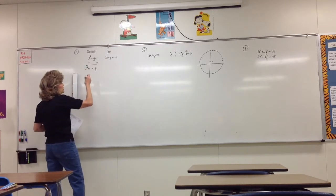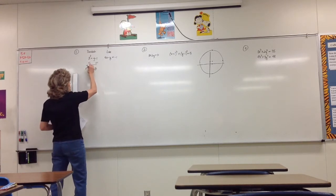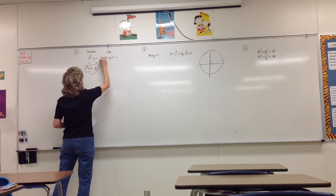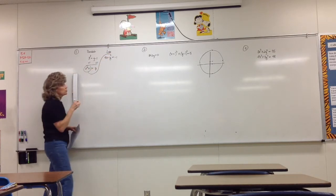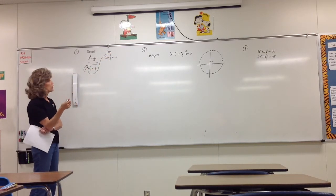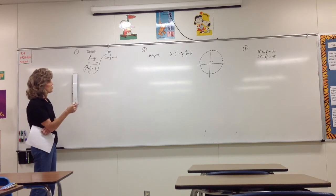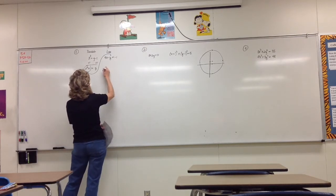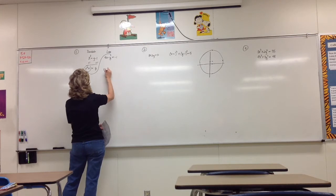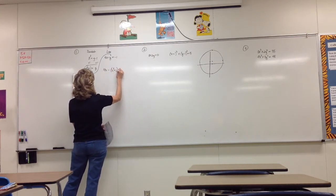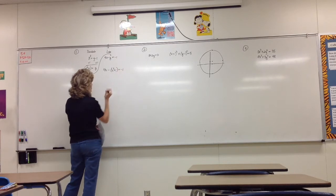So if we solve by substitution, when we have y isolated, you never substitute into the same equation — you always substitute into the other equation. Everywhere you see y, y is out and x squared plus one is in. So 4x minus all of (x squared plus one) equals negative one.